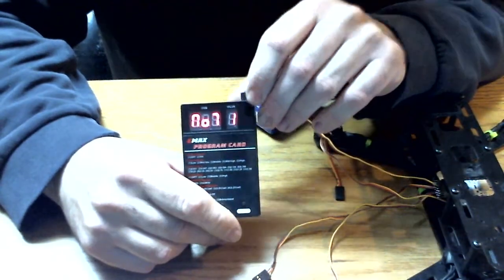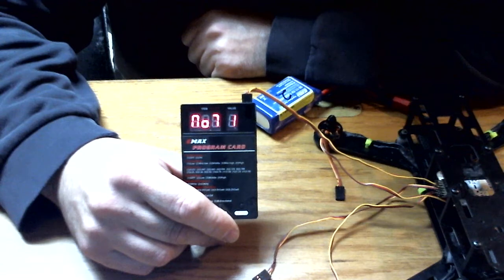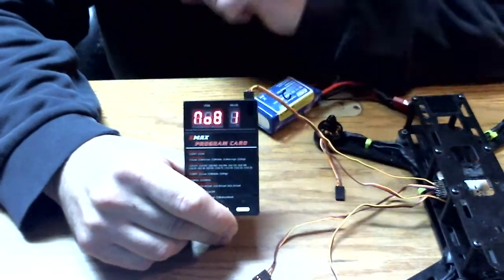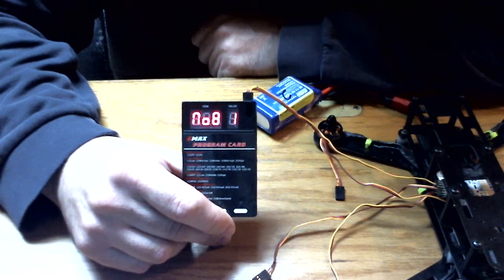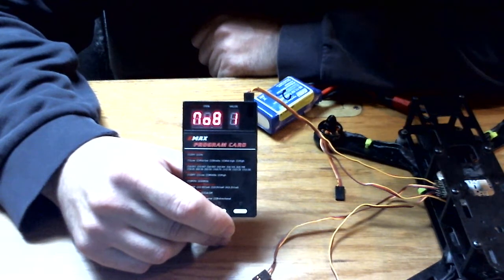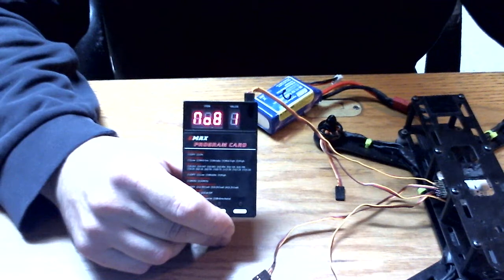Number seven is the cutoff mode. There are two different options. I use the soft cut. Number eight, which I don't believe you can do with these ESCs, is your rotational direction. So I just went with option one, which is your normal direction, and if you need to switch your motors, you can do it with your motor leads.